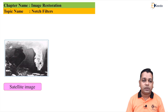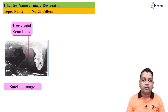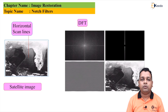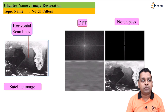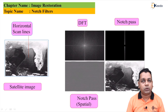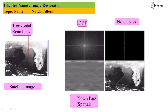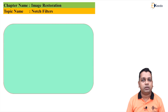We now discuss an example where a satellite image is provided as input, containing visible horizontal scan lines. A 2D discrete Fourier transform is performed on the input image to obtain the DFT spectrum. A notch pass filter function is then applied to extract the horizontal lines spatially, while applying a notch reject filter separates out the original image information, excluding those horizontal scan lines.